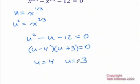That's great, except for one problem. We're not trying to solve this for u, we're really trying to solve it for x. So we have to go back to this line right here, where u equals x to the one-third, and rewrite our equations appropriately.